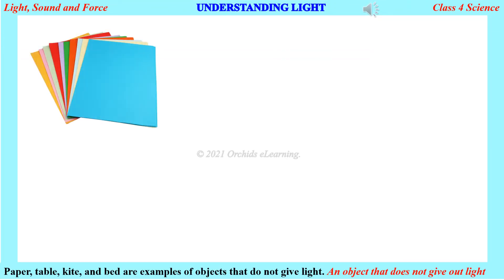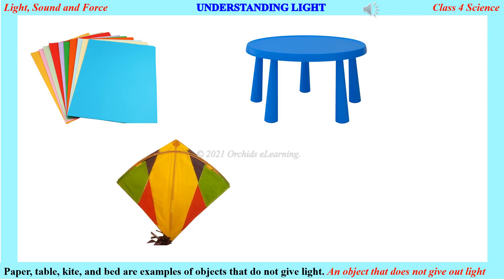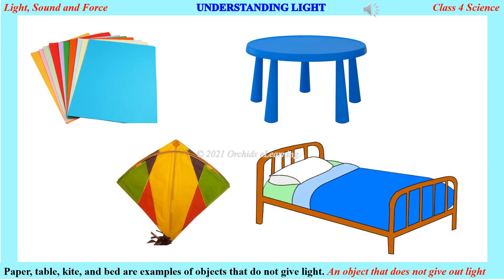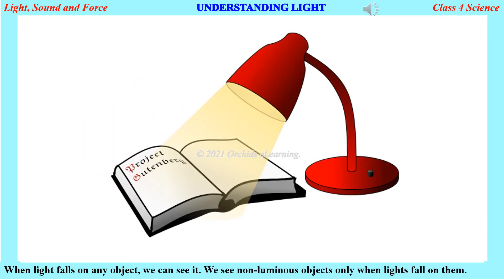Paper, table, kite, and bed are examples of objects that do not give light. An object that does not give out light is called a non-luminous object. When light falls on any object we can see it — we see non-luminous objects only when light falls on them.